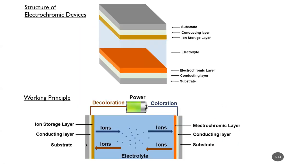So what's the basic mechanism of electrochromic devices? The image on the top shows a conventional electrochromic device. Conventional electrochromic devices consist of a substrate, conducting layer, ion storage layer, electrolyte, and electrochromic layer. The image on the bottom shows the working principle: under different applied voltages, ions in the electrolyte are switched between the ion storage layer and the electrochromic layer, producing a coloration and a decoloration process.